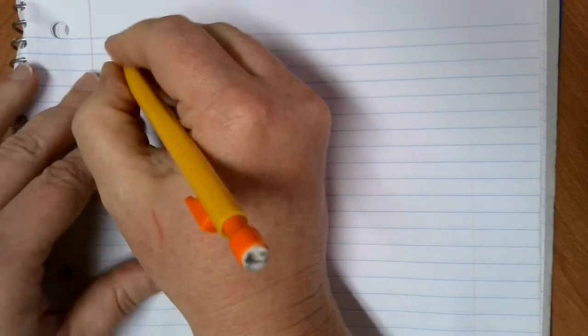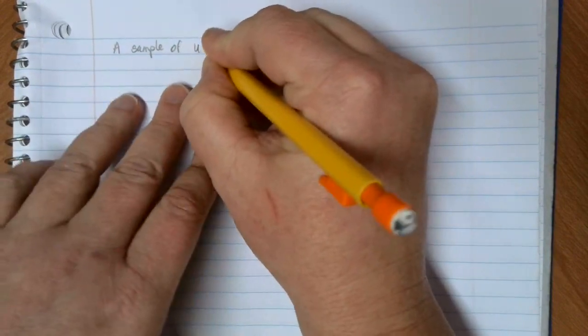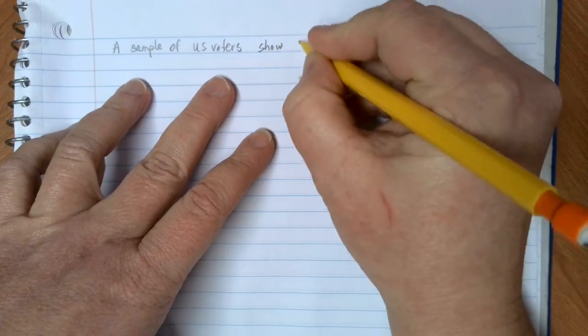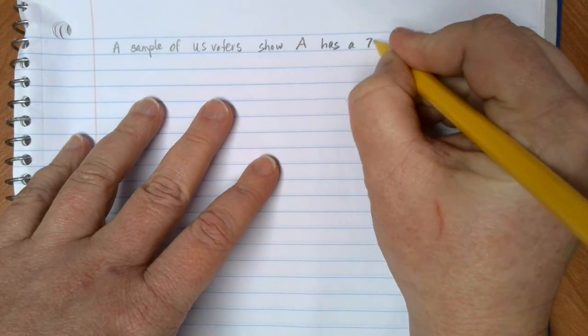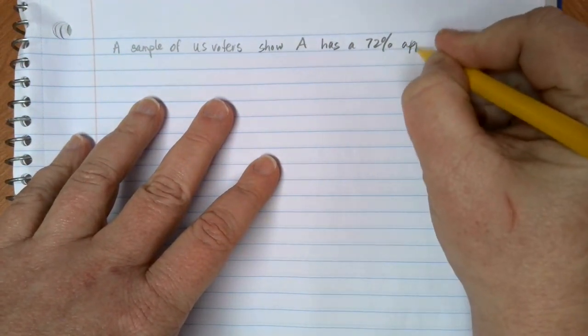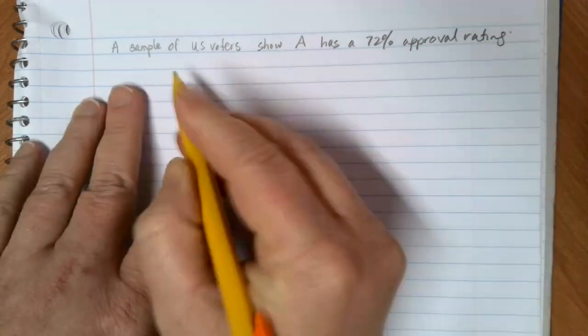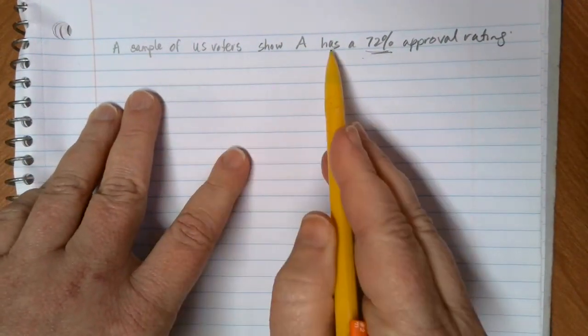When big polls like this announce their results, they're very careful about the wording. Let's look at a couple of ways that they may talk about this. They may say something like a sample of U.S. voters show candidate A has a 72% approval rating. So here what they're doing is they're telling you what the result of the sample is. They're giving us the statistic.